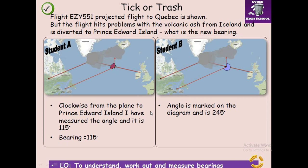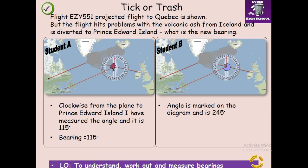Two students answered this question. Student A measured clockwise from the plane to Prince Edward Island and got 115 degrees. Student B said the angle marked on the diagram is 245 degrees. Who is correct? If you said Student B, you are correct and well done. Bearing must always be measured clockwise from north, and that angle is 245 degrees — that is how bearing is always measured.